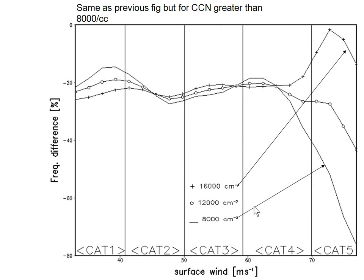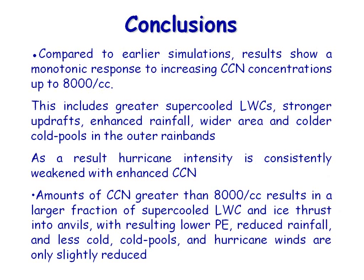At higher CCN — really putting out a huge pollution plume — the response turns around and is actually opposite. By 16,000 per cubic centimeter, we're still seeing weakening of the storm, but the weakening is much less than at 8,000 per CC. What's happening is there's so much pollution that droplets are so small that the riming rates of ice particles is suppressed. You get a huge anvil being produced, you don't get strong rainfall below cloud base, and you don't get cold pools to the same extent. Still, the storm is weakening, but more marginally.